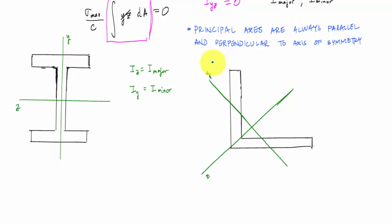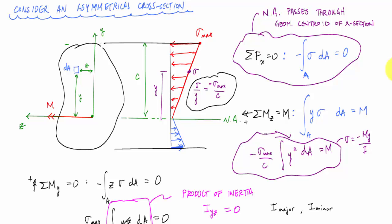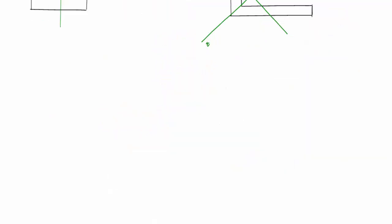The key point is that as long as the product of inertia is zero, the equilibrium equations are satisfied for an arbitrary shape. If the moment is applied along the z-axis, which represents a principal axis, we can still use the linear stress variation from the neutral axis. Now, let's take the case where we have a moment not applied about an axis of symmetry.